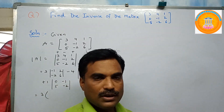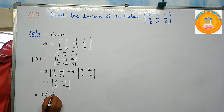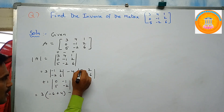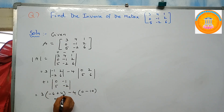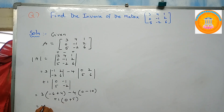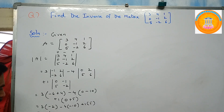Using the formula ad minus bc for each 2×2 determinant: three times (minus one times six minus two times minus two) equals three times (minus six plus four) equals three times minus two, which is minus six. Then minus four times (zero times six minus two times five) equals minus four times minus ten, giving plus forty. Then plus one times (zero times minus two minus five times minus one) equals one times five, giving plus five. So minus six plus forty plus five equals thirty-nine.